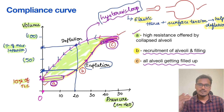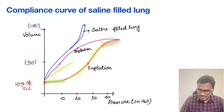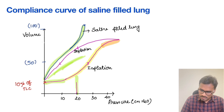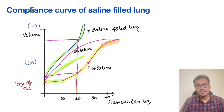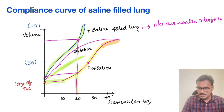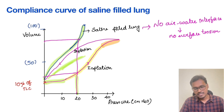To test this, researchers studied a saline-filled lung, which eliminates the air-water interface and therefore surface tension. Comparing the saline-filled lung curve with the normal deflation curve, the saline-filled lung is more compliant — even with a small amount of pressure, it achieves a larger TLC. For example, even with 20 mm rise in pressure it achieves a larger total lung capacity. Although a saline-filled lung is not useful for gas exchange, this study clearly demonstrates how powerfully surface tension contributes to alveolar collapse.